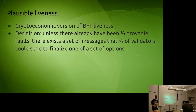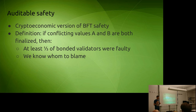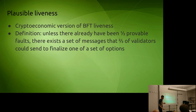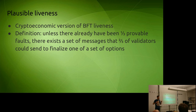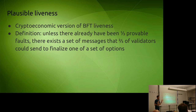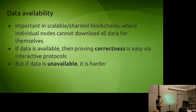Plausible liveness: the algorithm does not get stuck. In order to satisfy the safety condition, you need mechanisms for penalizing validators for bad behavior. But you don't want the opposite problem where a badly designed algorithm gets into a situation where it hasn't finalized anything and can't finalize anything without validators voluntarily violating their penalization conditions and sacrificing their entire deposits. Plausible liveness means the protocol can't get stuck — there always exists a path toward finalizing and agreeing on some block.